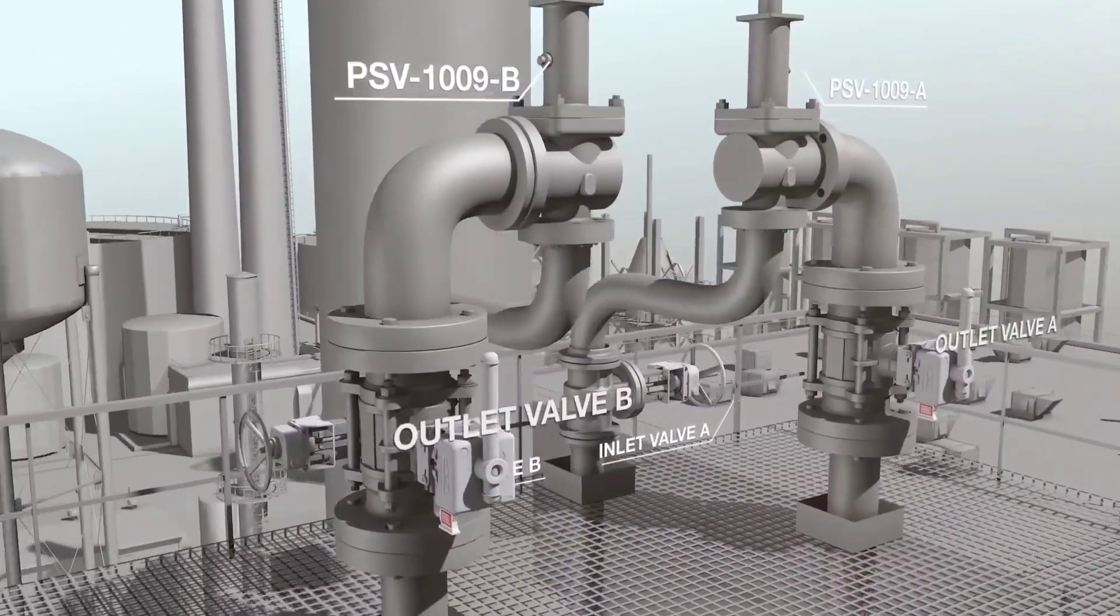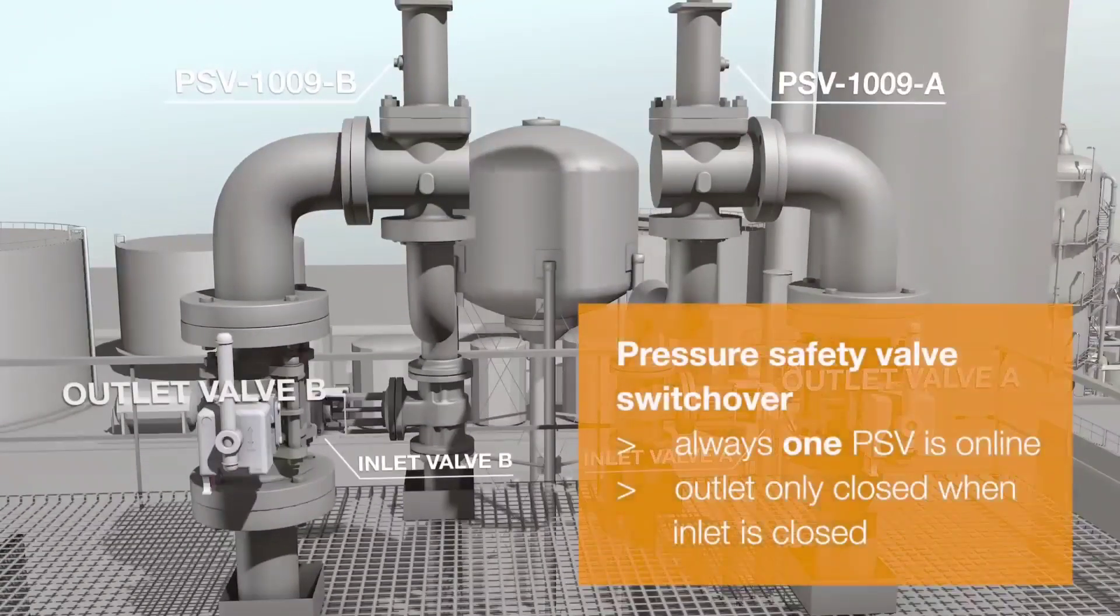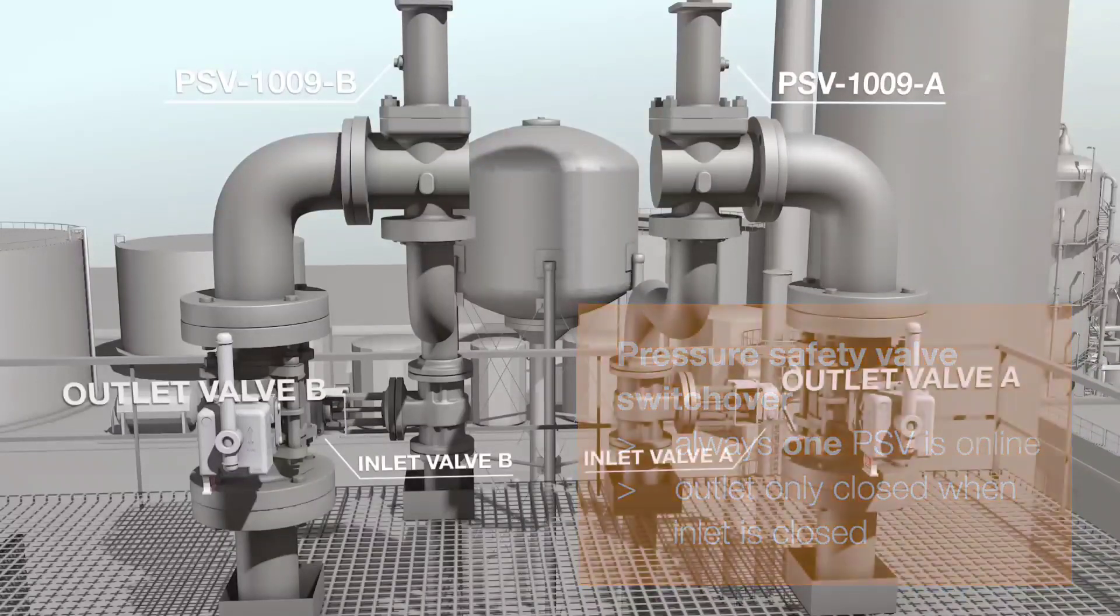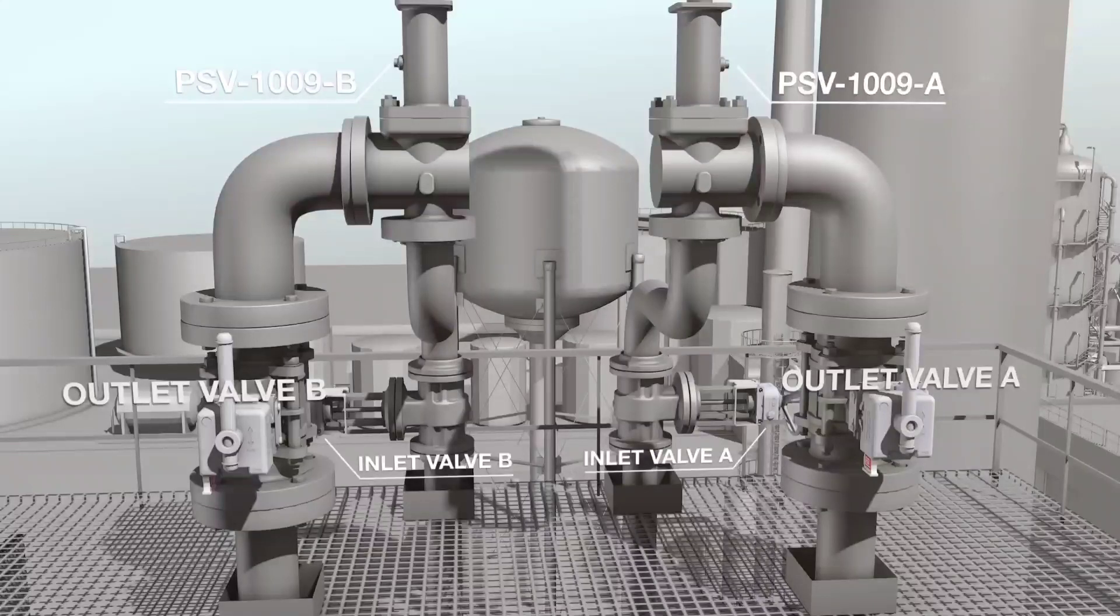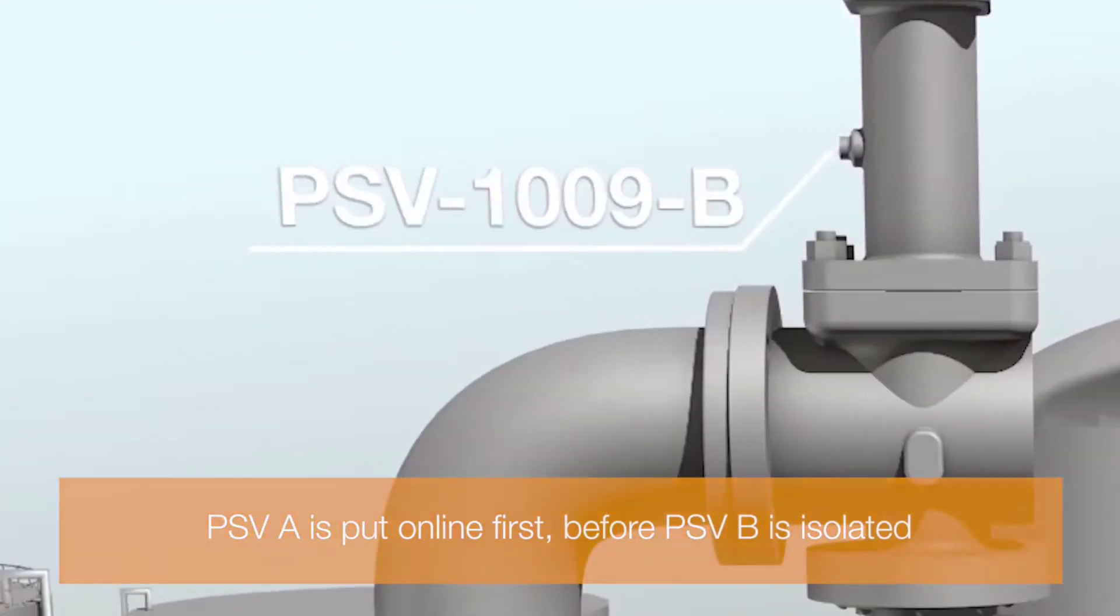In a parallel PSV system, inlet and outlet valves are interlocked to ensure that at least one relief valve is online at all times. In this example, PSV-A is put online first, before PSV-B is isolated.